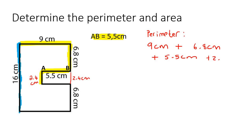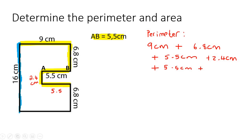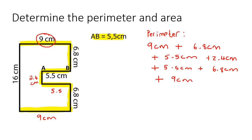So we can say plus 2.4 centimeters, plus. Now we go to this part again — that's just going to be the same as AB, so that's 5.5, giving us plus 5.5 centimeters, plus. Now we can do this part which is 6.8, and then this part over here, which has the same length as the top so plus 9 centimeters, and then plus this last piece which is 16 centimeters. Adding all of that together gives us 61 centimeters.